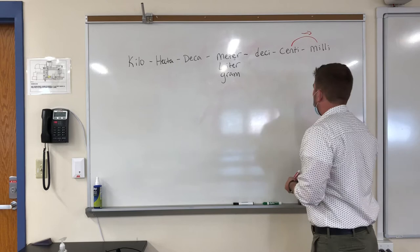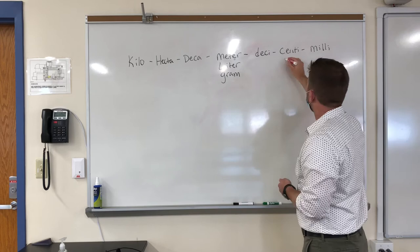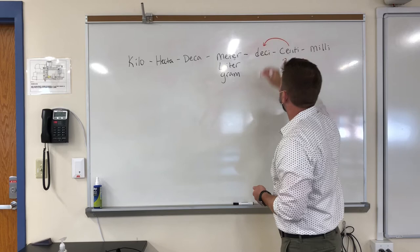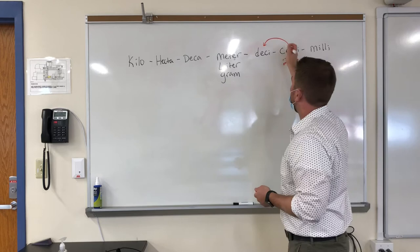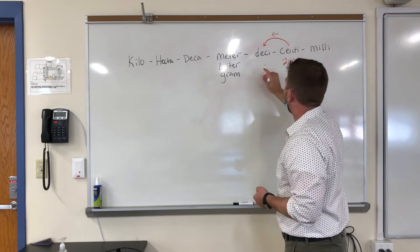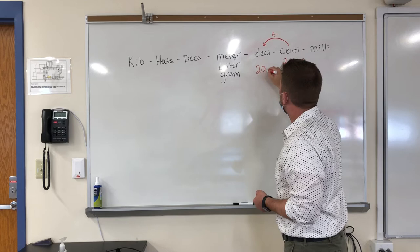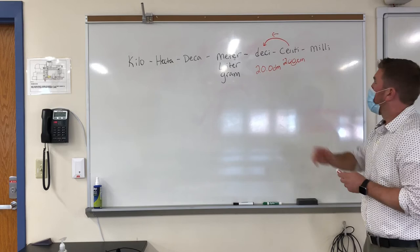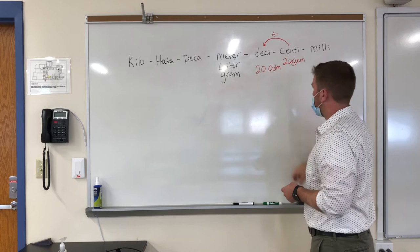If I want to work the other way, let's start with those 200 centimeters again. I want to go to deci. Now a decimeter is larger than a centimeter, so I'm moving one space — but this time I'm moving to the left. When I move to the left, my decimal also moves to the left, and I get 20 decimeters. So whatever direction I move, I count the number of spaces and move the decimal in that same direction.